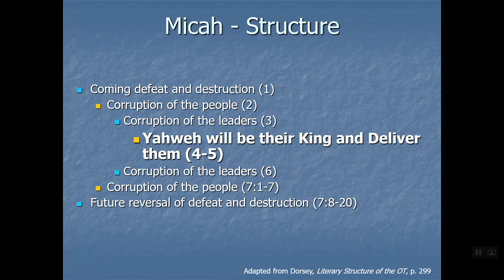Hezekiah had a similar situation where Assyria came to lay siege - something we'll read about in Micah - and he wrote to Babylon and trusted in Egypt, which God told him not to. Babylon then turned out to be the one that eventually took them into exile. Isaiah was focused around the 701 BC event where Assyria surrounded the city but the angel of the Lord destroyed 185,000 Assyrians. However, Isaiah ultimately prophesied exile to Babylon, as well as restoration, the return from exile, the suffering servant, and God coming to save His people.